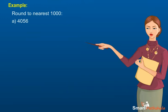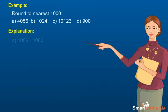Example: round to nearest 1000. a) 4056, b) 1024, c) 10123, d) 900. Explanation: a) 4056 lies between 4000 and 5000. Since it is closer to 4000, it is estimated as 4000. b) 1024 lies between 1000 and 2000. Since it is closer to 1000, it is estimated as 1000.